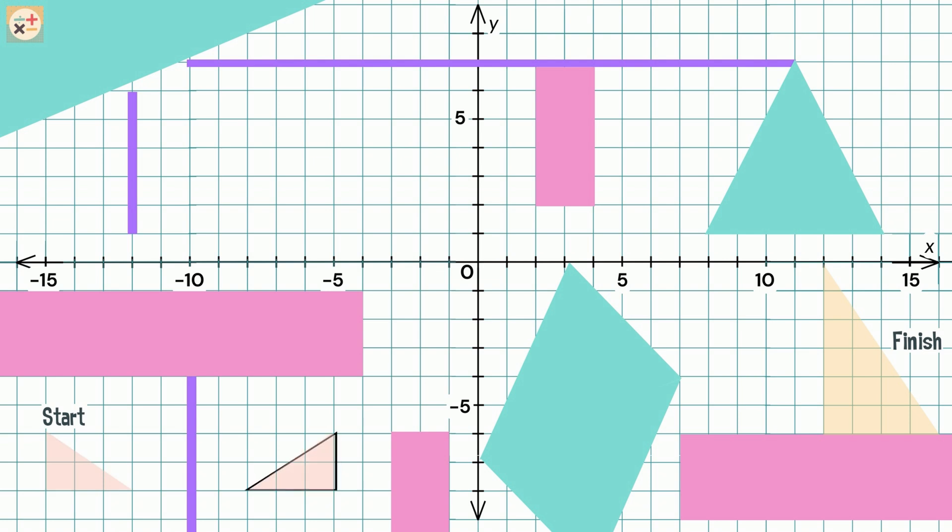The first move uses reflection. The shape has been reflected across the line X equals minus 10. The yellow line shows us this.